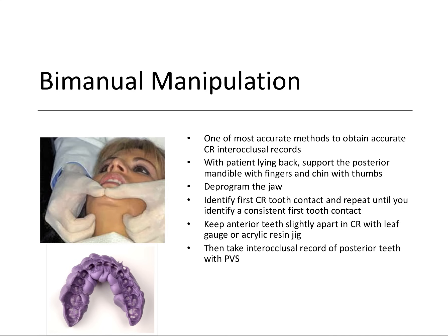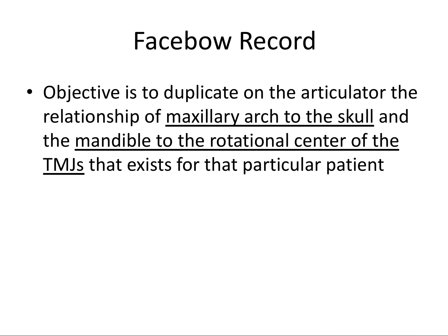Once you can reproduce the first CR tooth contacts consistently, the ideal CR record involves keeping the teeth slightly apart in the CR position and then taking a record of the back teeth with PVS material. You might only capture the posterior teeth — premolars and molars — for an ideal CR because you don't want the anterior teeth to get in the way.